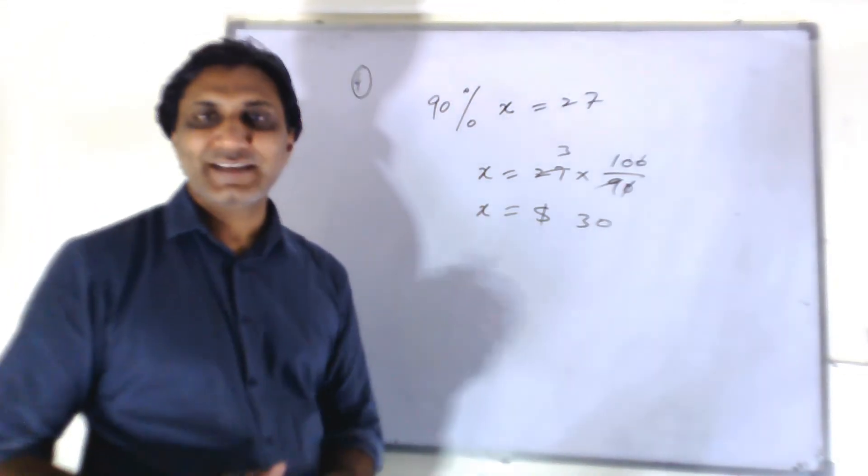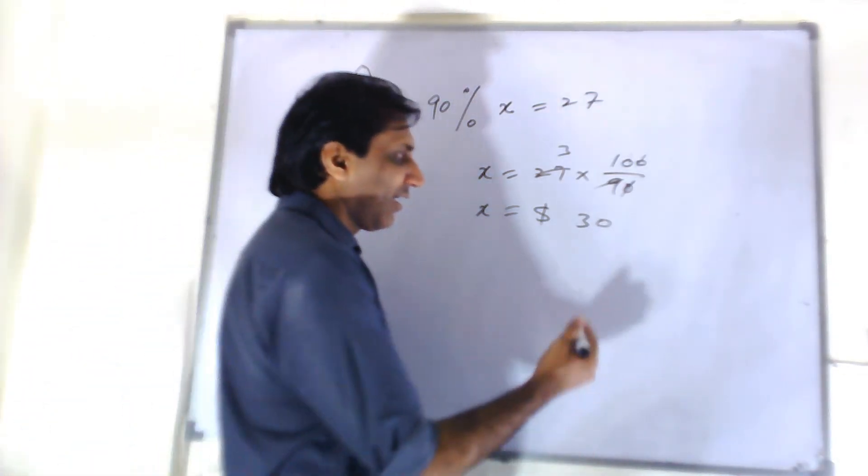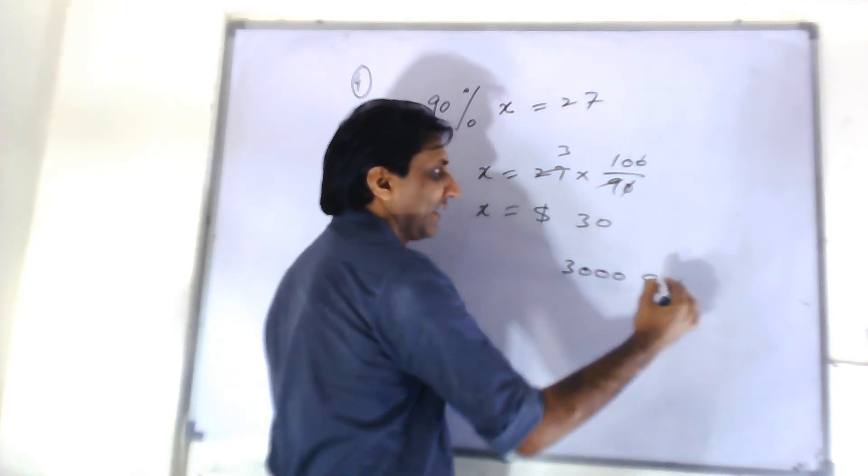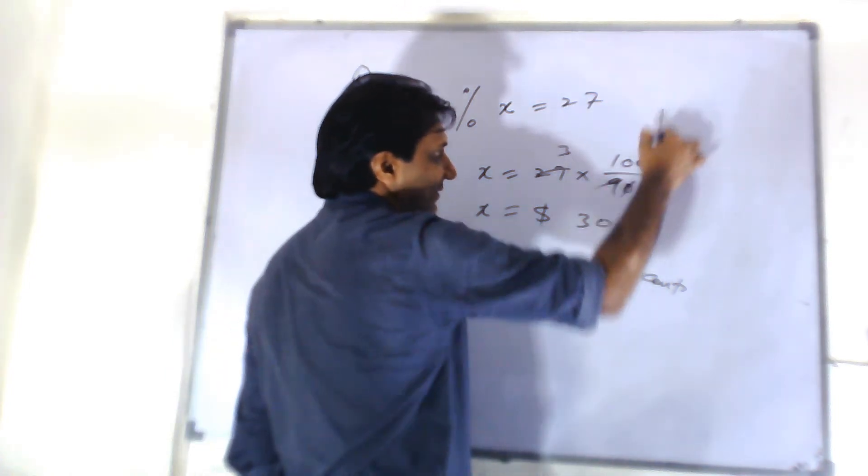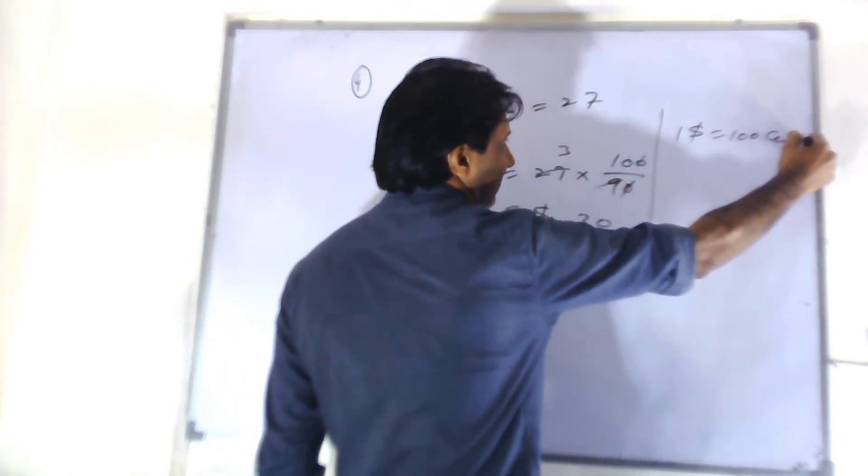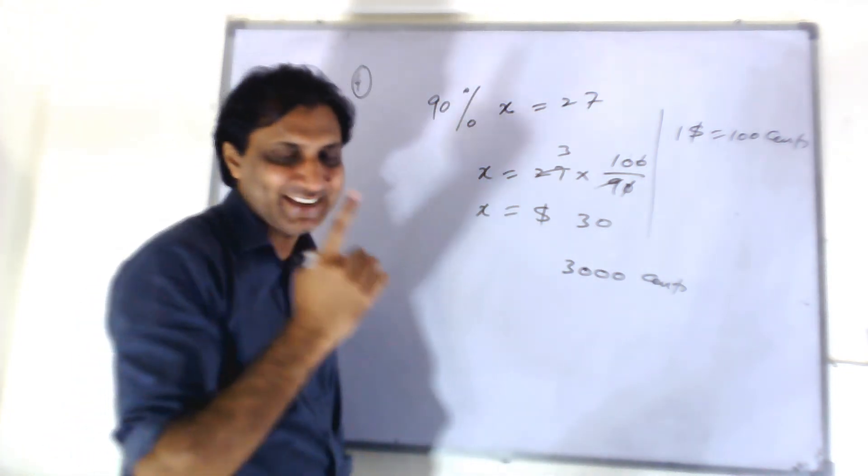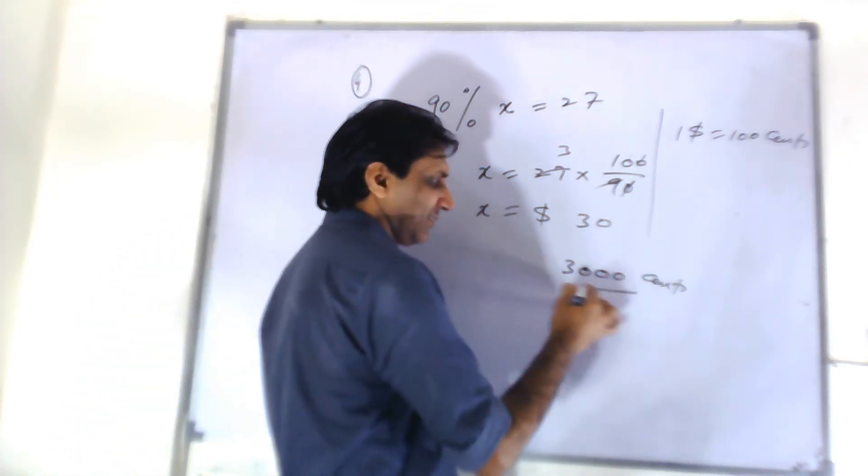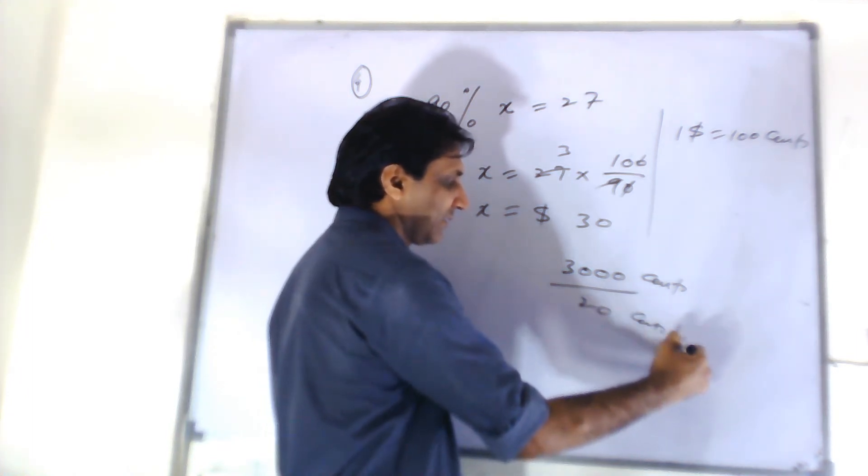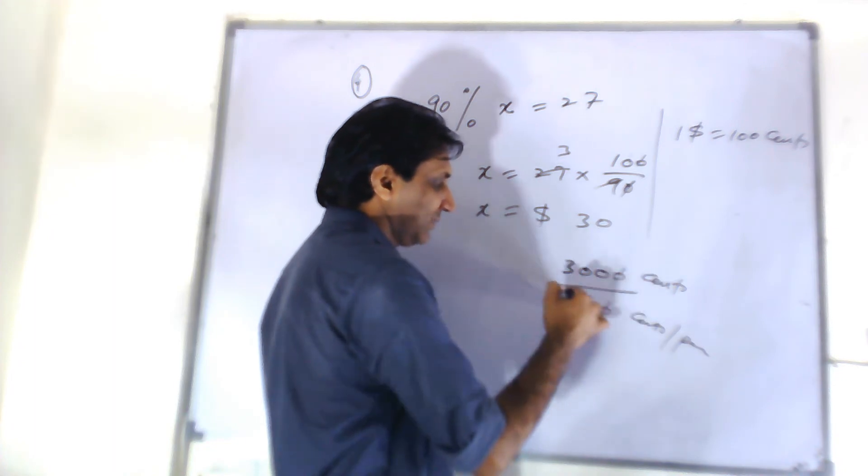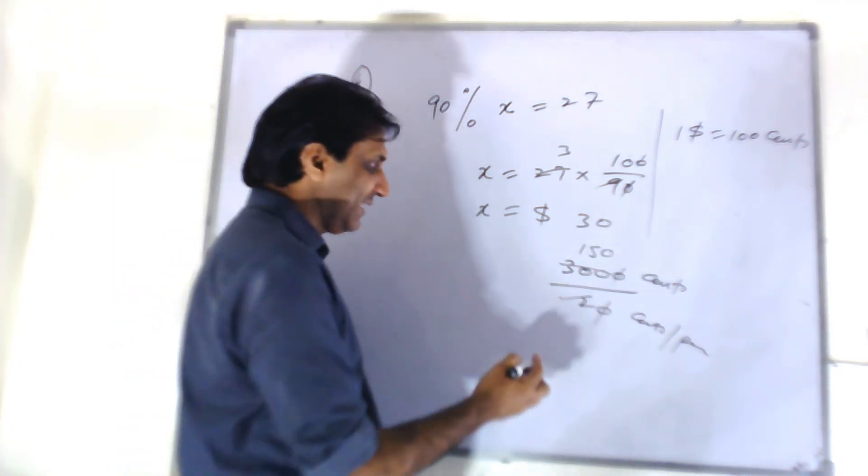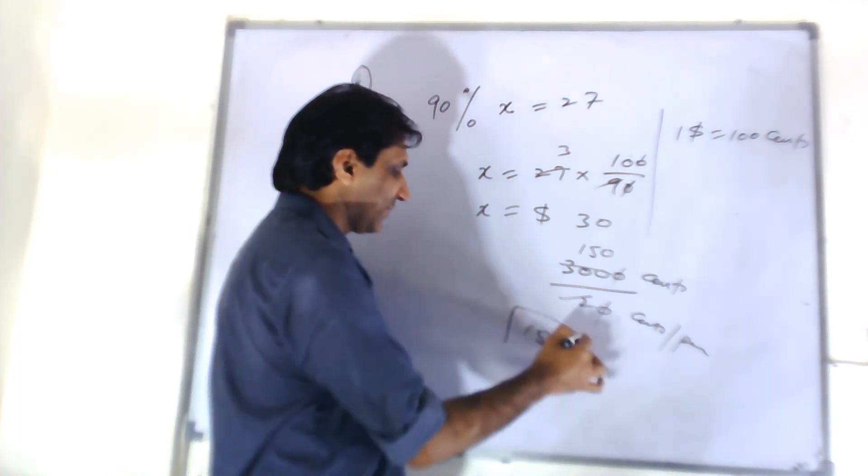So this is the total amount he gathered. $30, or 30 times 100, 3000 cents. There are 100 cents in $1. Okay? So he collected 3000 cents and each paper cost 20 cents per paper. So it simply means he delivered 150 papers.